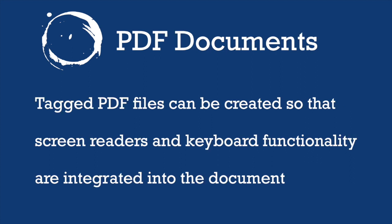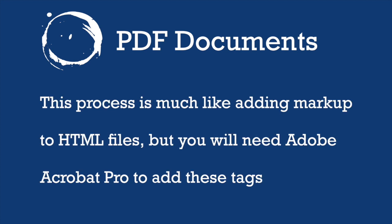The eleventh element of effective Universal Design for the Web is PDF documents. You have probably experienced plenty of PDF documents before, but most of them are not accessible to people using a screen reader. Tagged PDF files can be created so that screen readers and keyboard functionality are integrated into the document. This process is much like adding markup to HTML files, but you will need Adobe Acrobat Pro to add these tags. These tags are very worthwhile because they ensure your document is organized correctly and that screen readers and keyboard users can effectively navigate through your PDF.